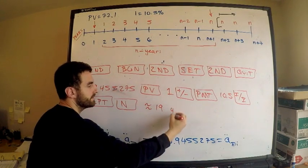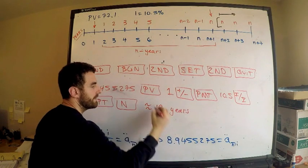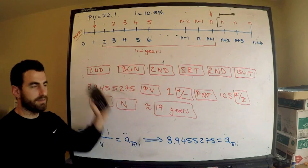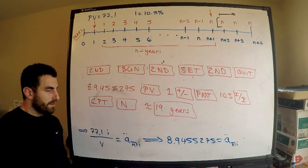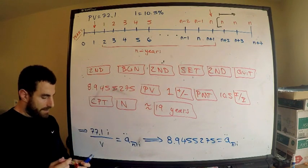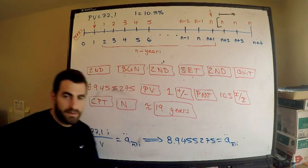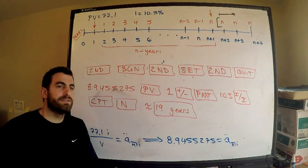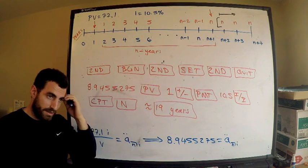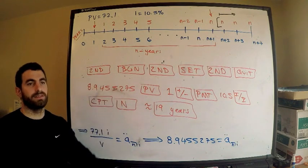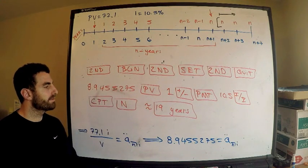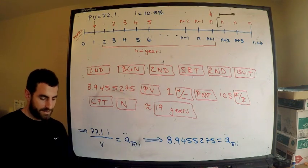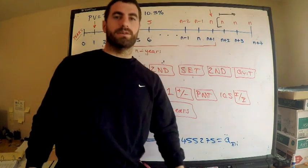So n equals 19 years — that is our answer. There are a lot of steps, but if you practice the BA II Plus enough, you'll see it's quite logical and it will make sense rather than just memorizing. I hope this was helpful — like the video, subscribe, and comment below.